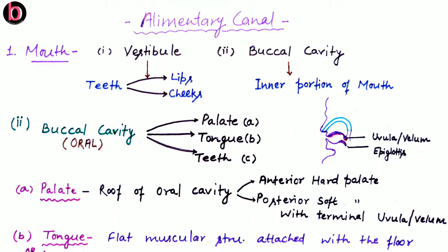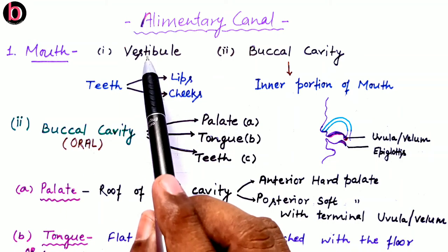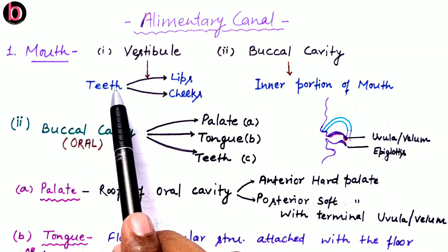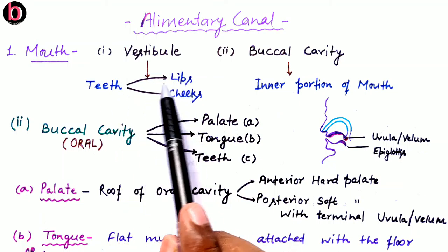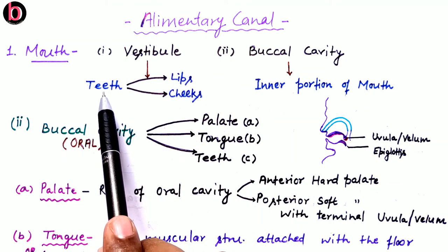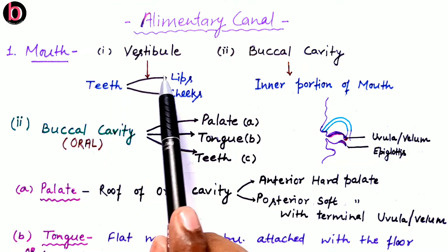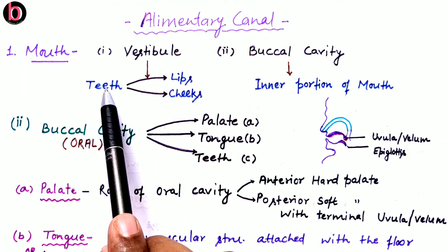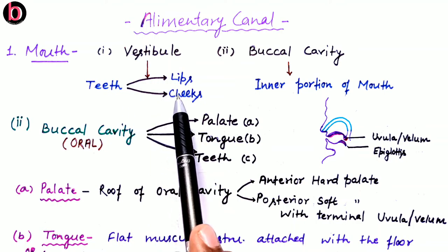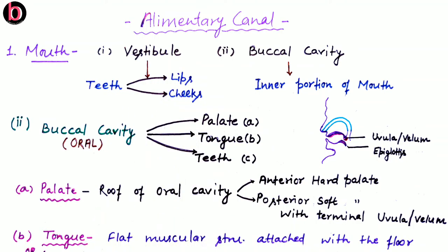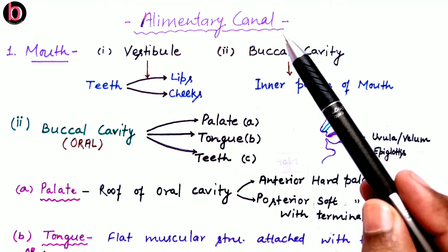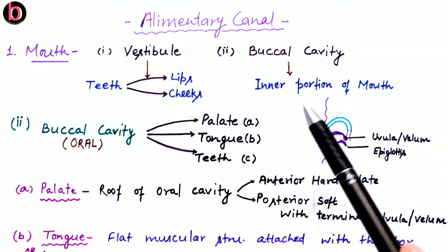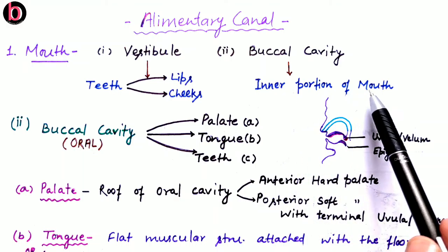Here we will discuss first about the mouth, which is a part of the alimentary canal. In the case of the mouth there are two parts: the vestibule and the buccal cavity. The vestibule is the space that exists between the teeth and lips, or between the gums and lips, as well as between the teeth and cheeks or gums and cheeks.